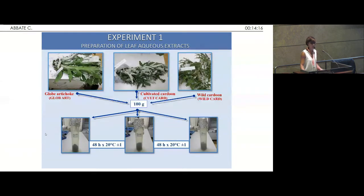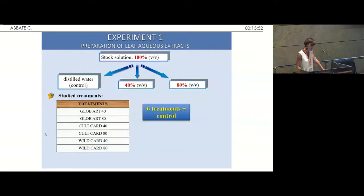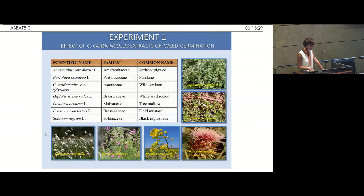For the first experiment on weed control, 100 grams of globe artichoke, cultivated cardoon, and wild cardoon were washed, cut, and ground, and then one liter of water was added. The samples were incubated at room temperature in the dark for two days. After that, the solution was filtered and two different dilutions were made: 40% and 80%. So in total we have six treatments plus the control represented only by distilled water. We tested these different solutions — the 40% and 80% of wild cardoon, cultivated cardoon, and globe artichoke — on seven species very common in the Mediterranean basin to see the effect on weed germination.